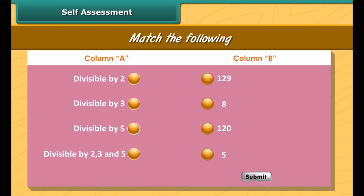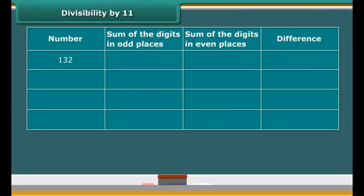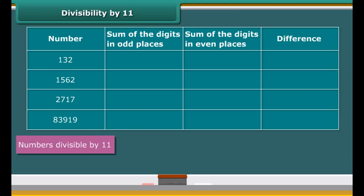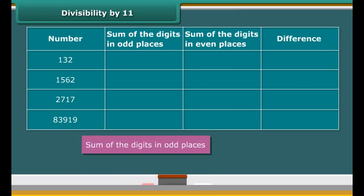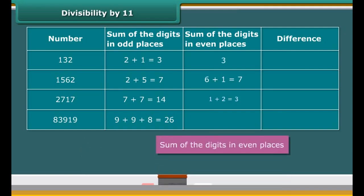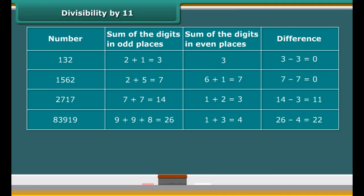All these numbers are divisible by 11 as can be checked by direct division method. Consider the sum of the digits of these numbers in the odd places, starting from the ones place. Likewise, consider the sum of the remaining digits, or the digits in the even places. Compute the difference between the two sums just obtained. The difference is either 0 or a multiple of 11. This is not by chance — it is a general rule. A number is divisible by 11 if the difference between the sums of its digits in the odd and even places is divisible by 11.